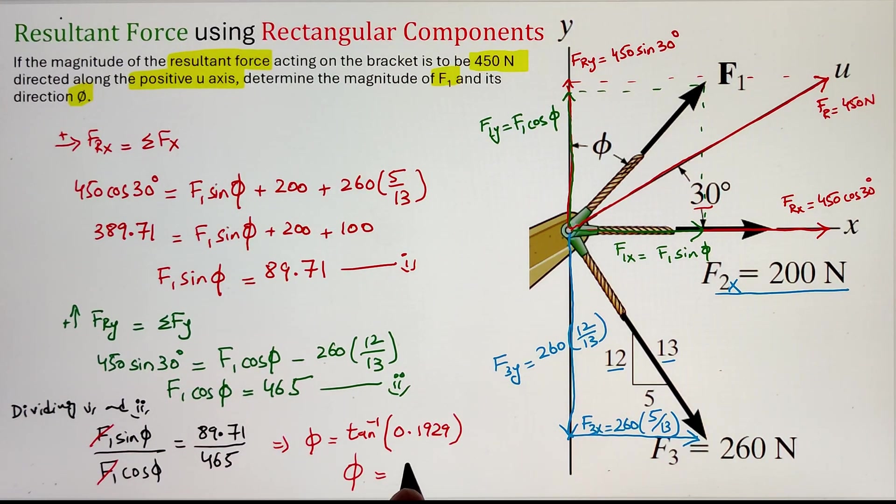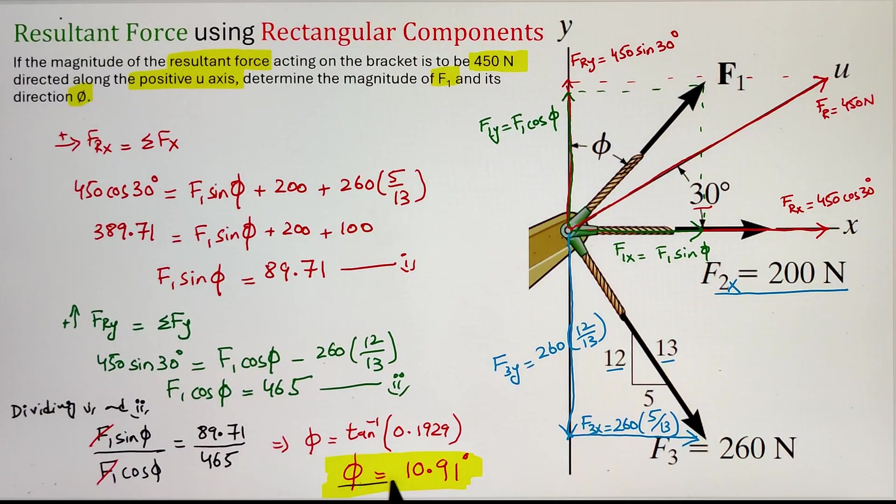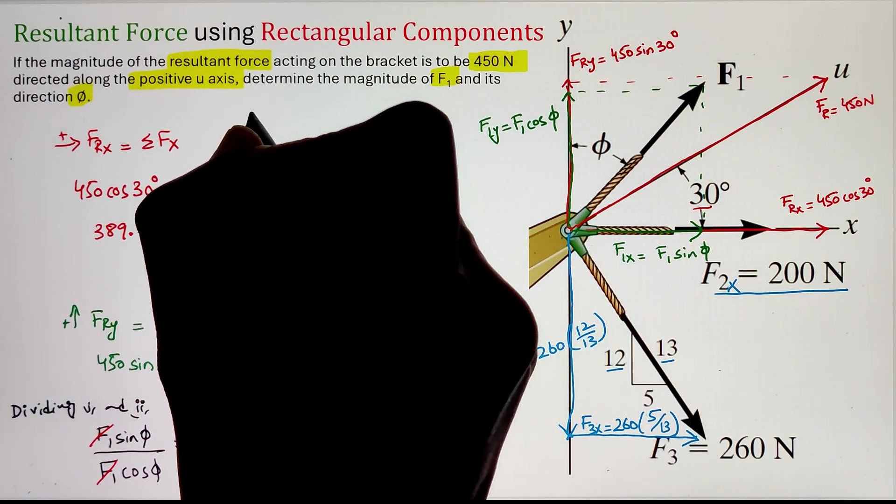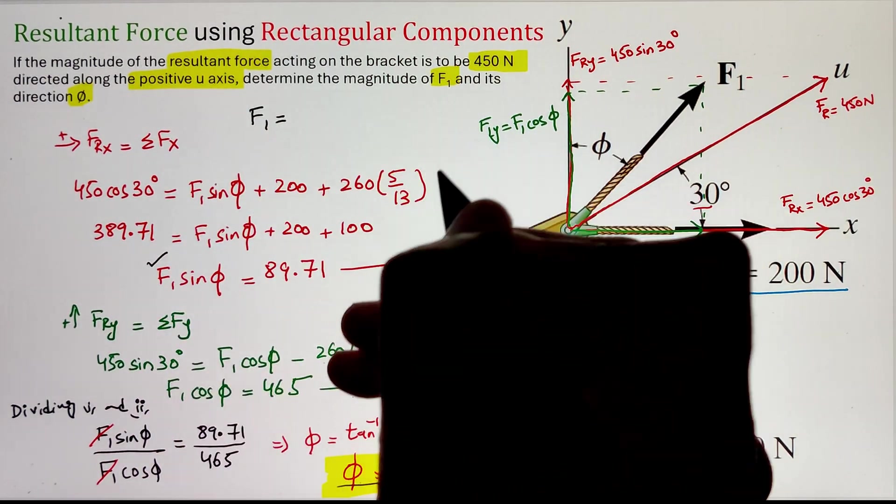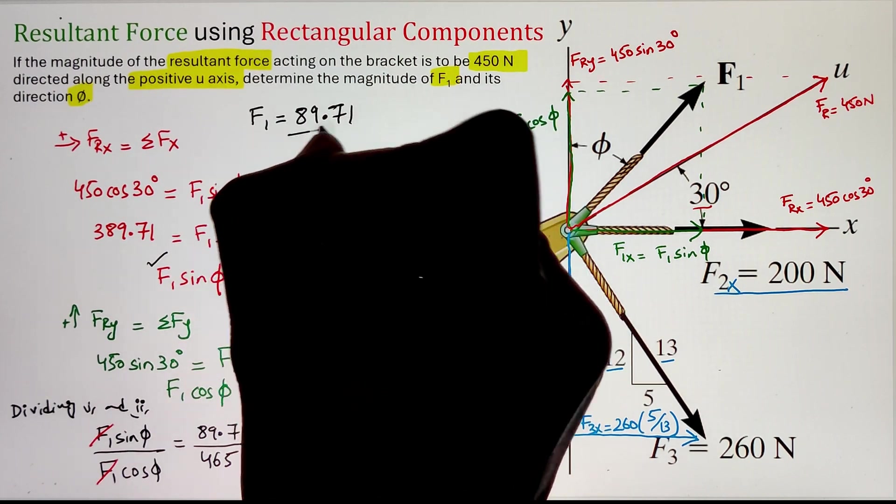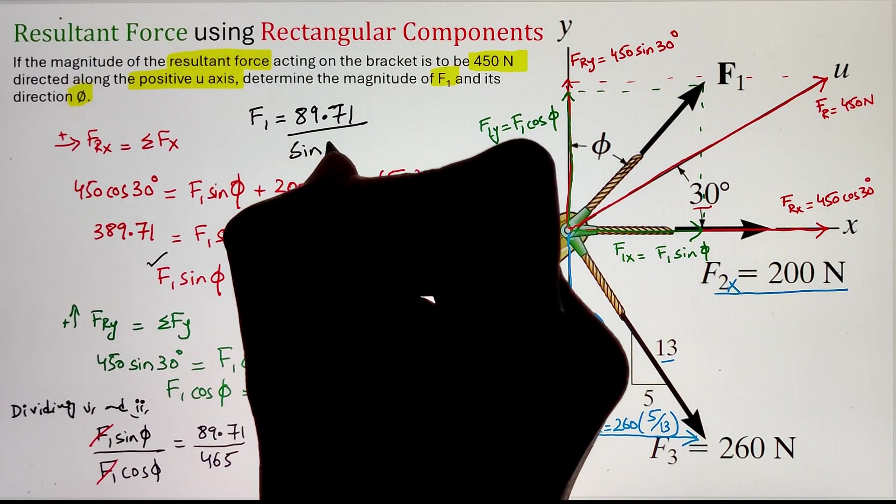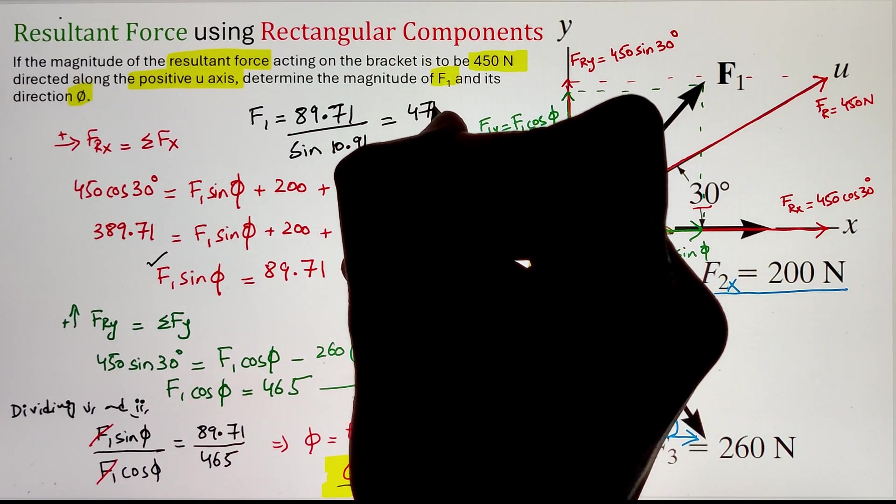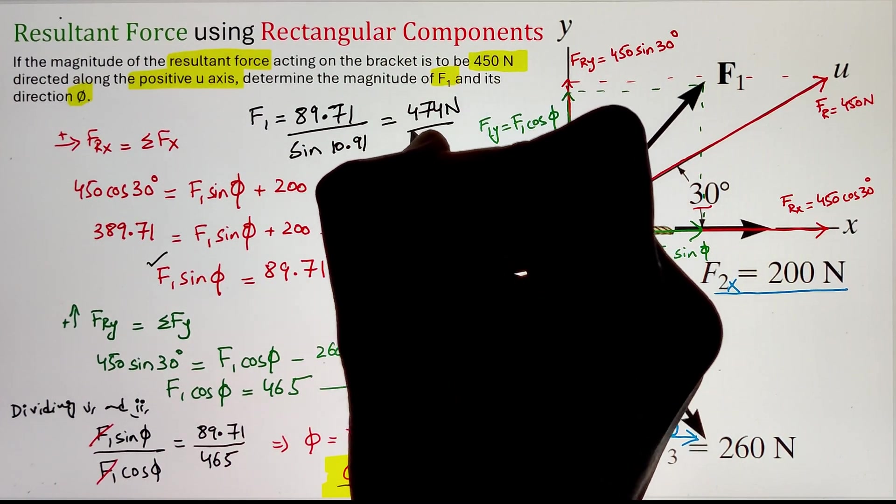Now, once we have calculated the angle phi, we can use any one of these two equations to calculate our force F1. Here I am going to use our equation 1. Plugging the phi angle of 10.91 in equation 1 and simplifying, we can get our value of F1. So dividing 89.71 with the sine function of 10.91 gives us our value of force as 474 Newtons.